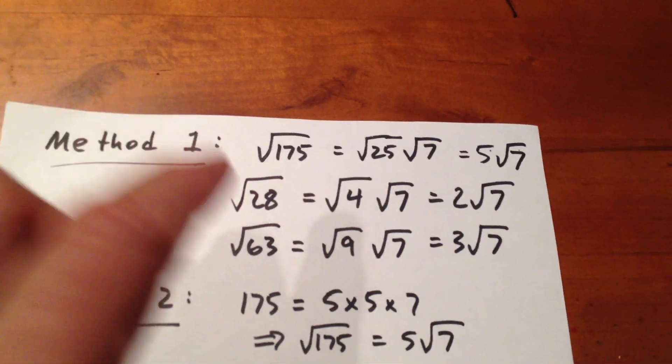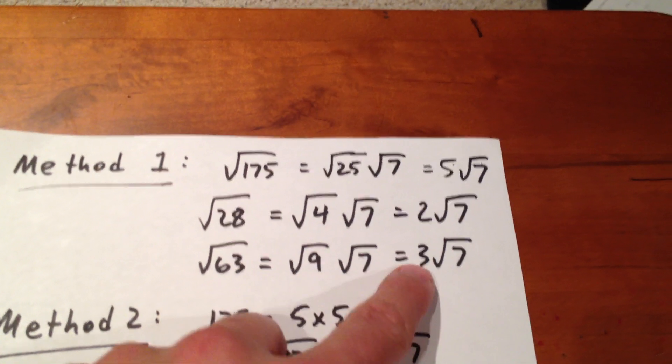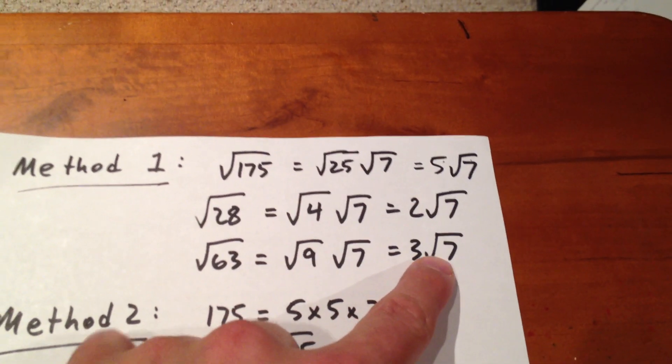And finally, in the third line, we see that root 63 is equal to root 9 times root 7. Root 9 is a perfect square, so that's 3 root 7.